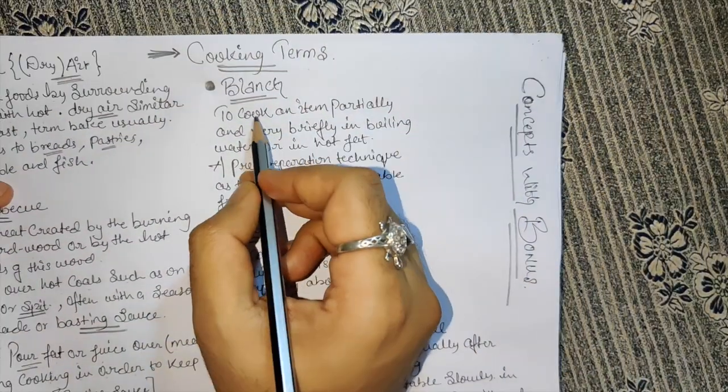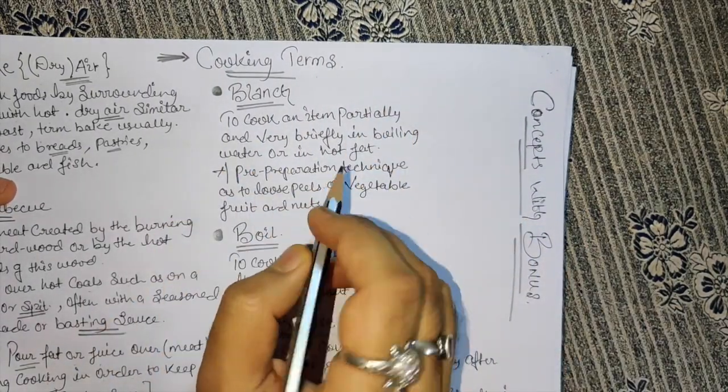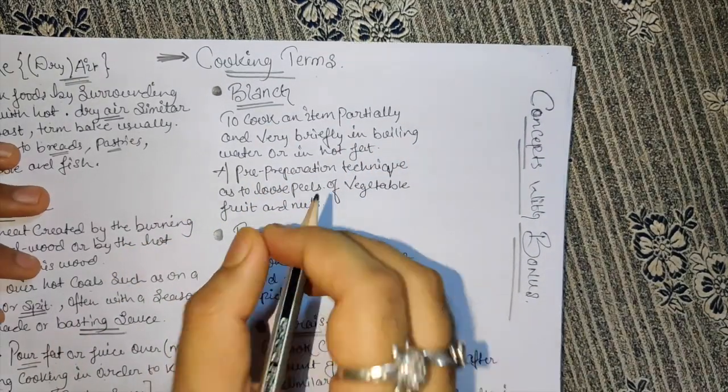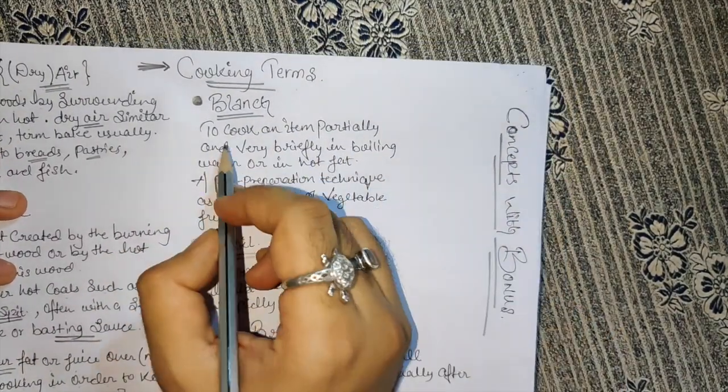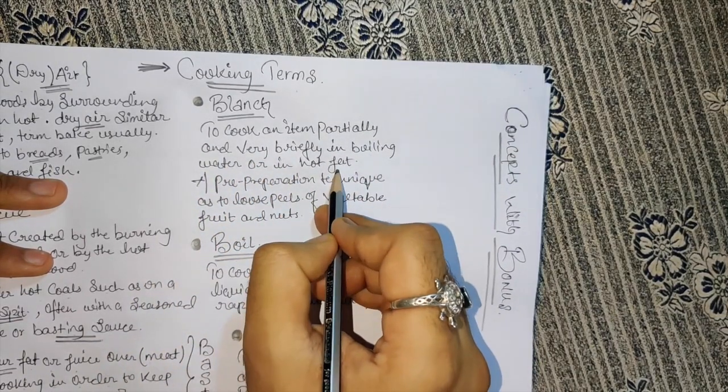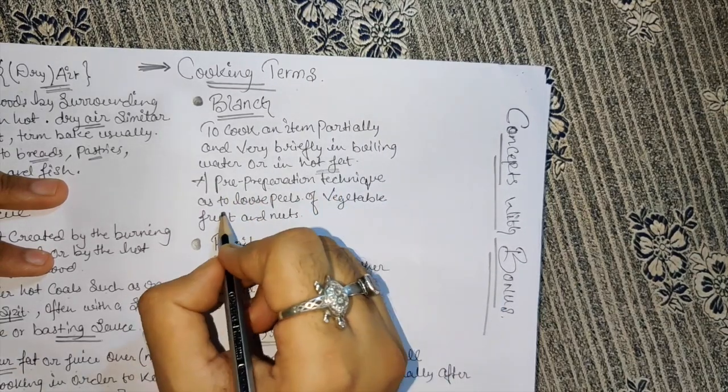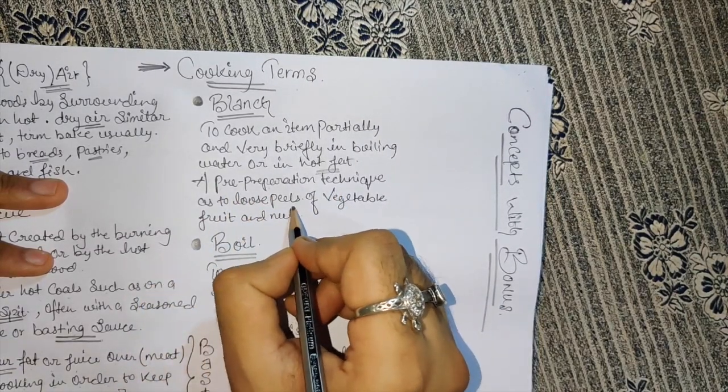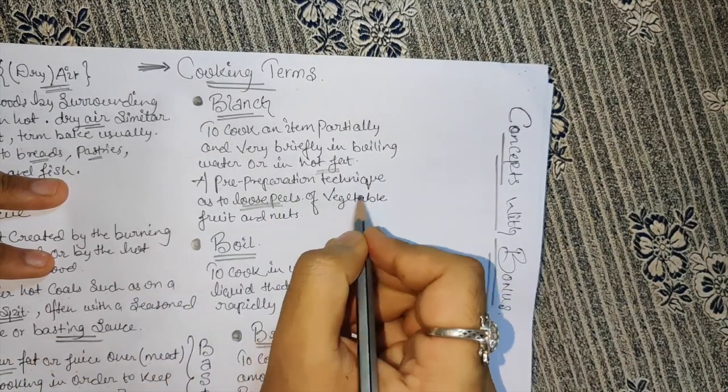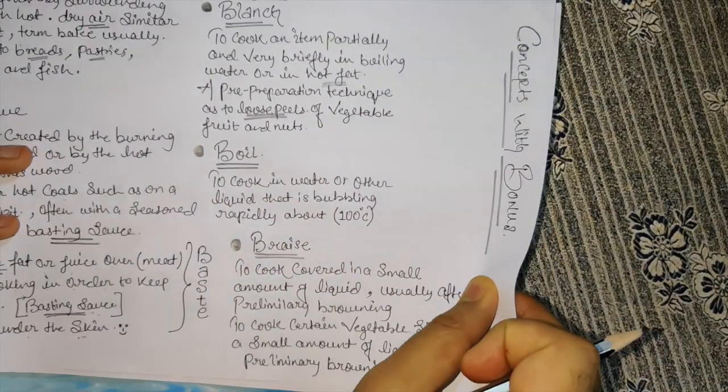The next is blanch. To cook an item, particularly very briefly in boiling water or hot fat. A pre-preparation technique to loosen peels of vegetables, fruit, and nuts. That's what exactly blanch does.